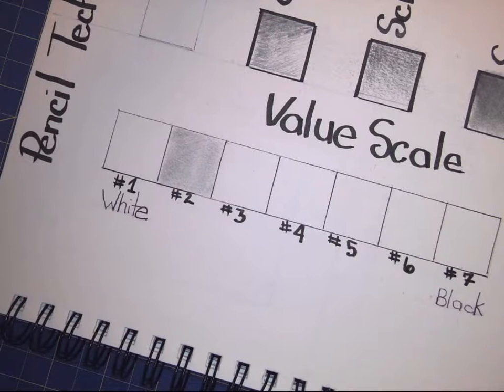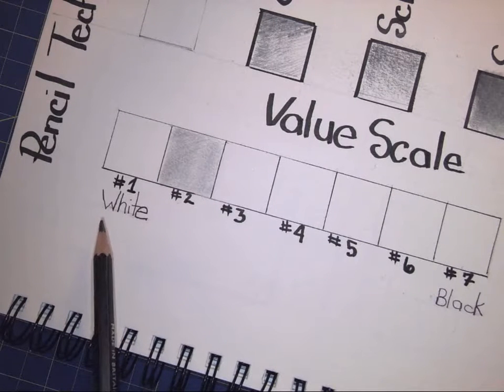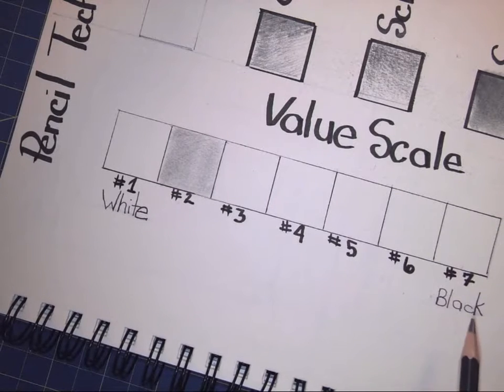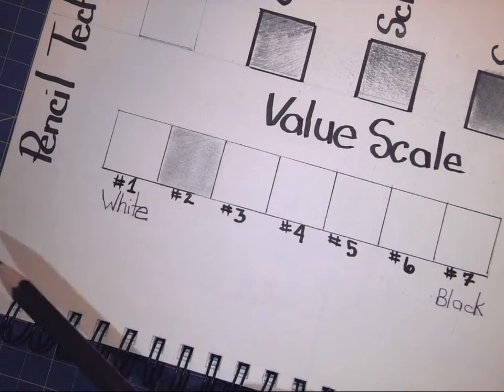Good morning and welcome to another video demonstration. Today we're going to be working on value scales going from number one, which is white, to number seven, which is black, and we'll have steps in between. I've already done number two.